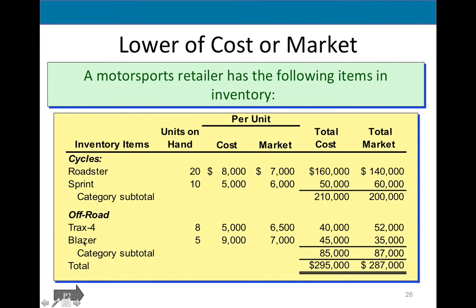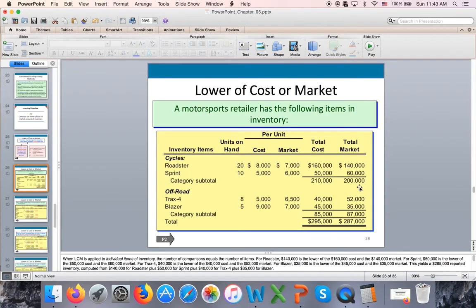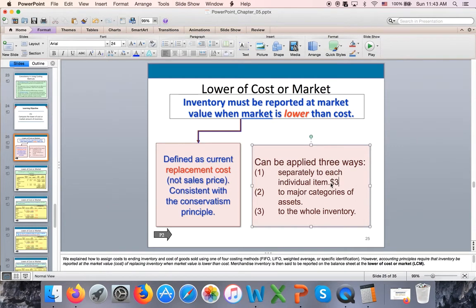We have four types of bicycles. This is their number of units, their cost, and their replacement value — market. Going item by item: look at roadsters — the LCM lower of cost or market. Do I have to adjust? Yes, by $20,000. LCM 50 vs 60 — no adjustment. Item by item 40 vs 52 — no adjustment. 45 vs 35 — yes, adjust by $10,000. So if I use item by item, my total adjustment would be $30,000.